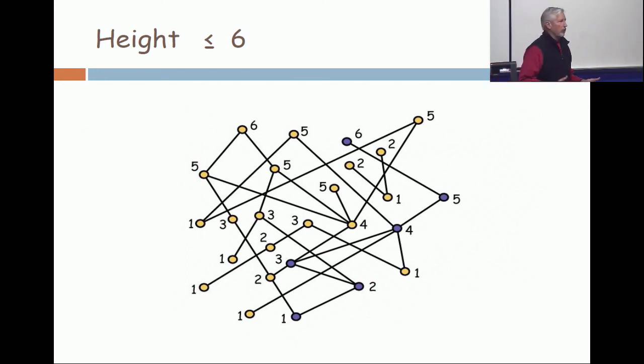Putting the two things together, what is the height of this poset? It is 6. I've got a 6 element chain: 6, 5, 4, 3, 2, 1 in blue. And I have a certificate that the height is at most 6. The blue points say at least 6. The partition says at most 6. So the answer is 6.